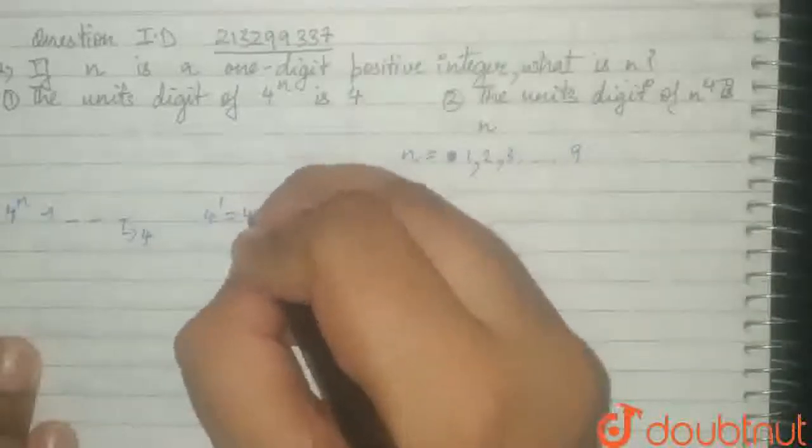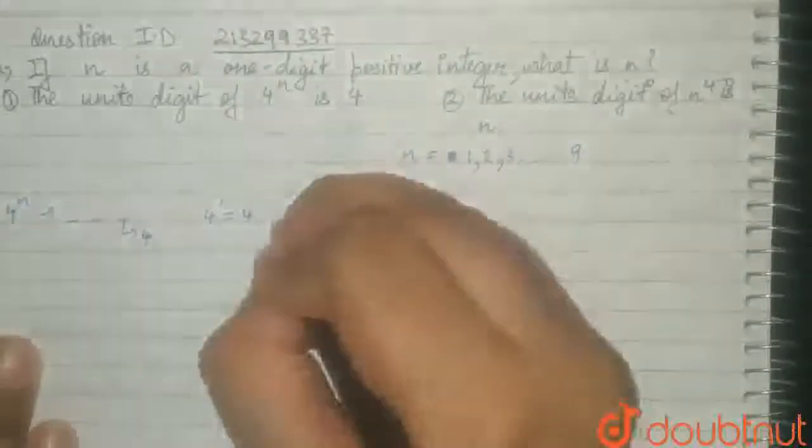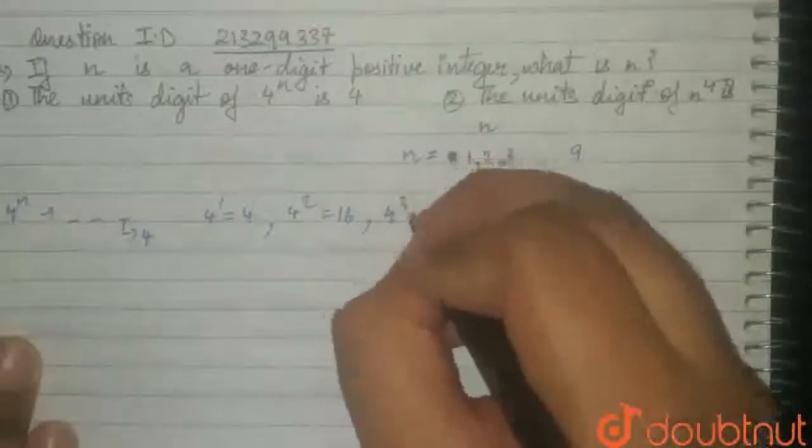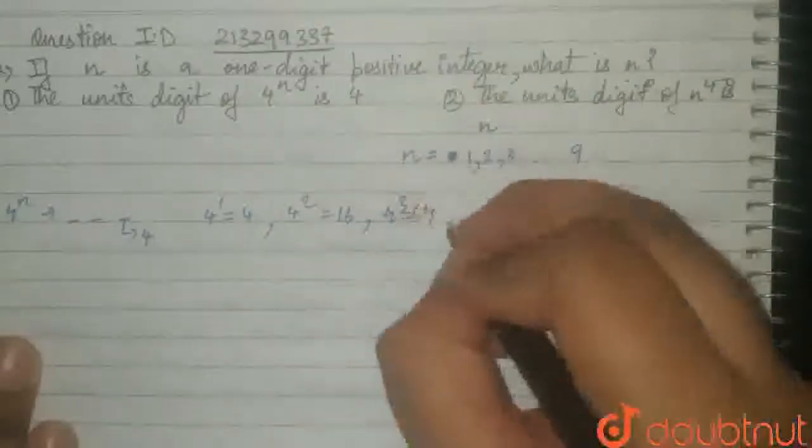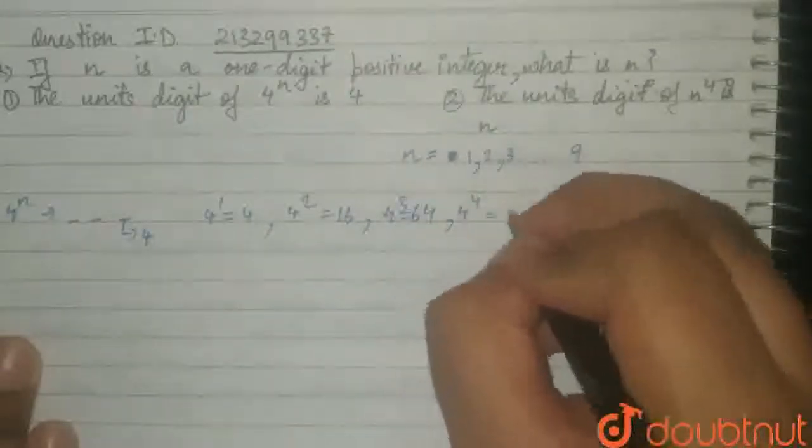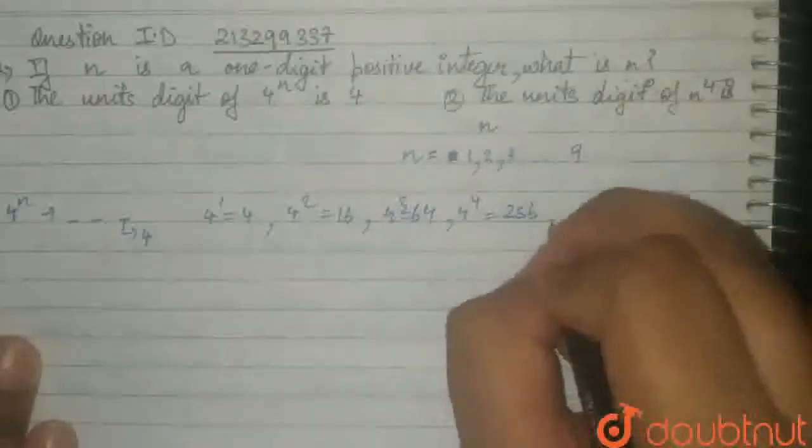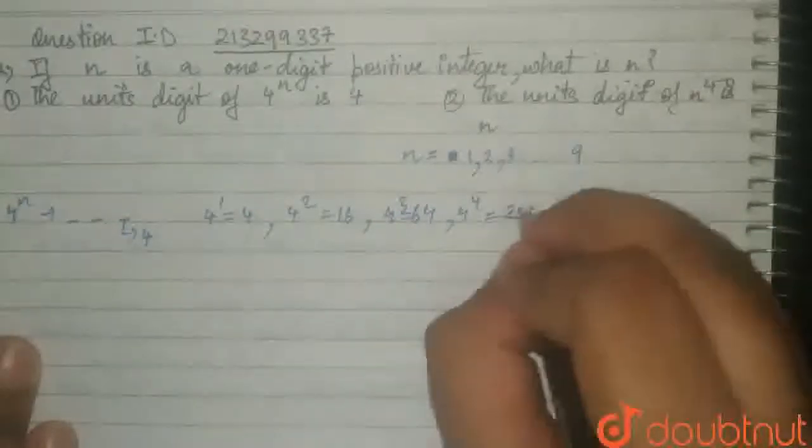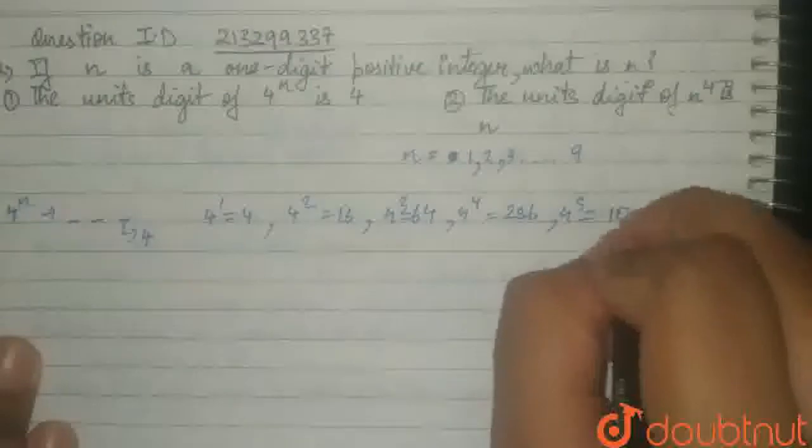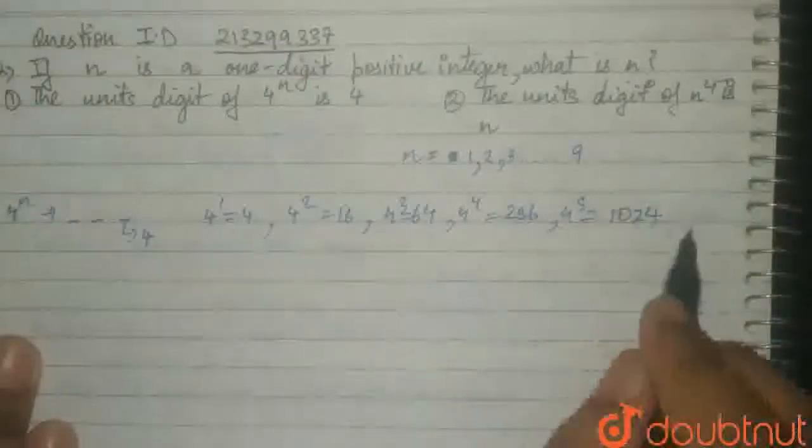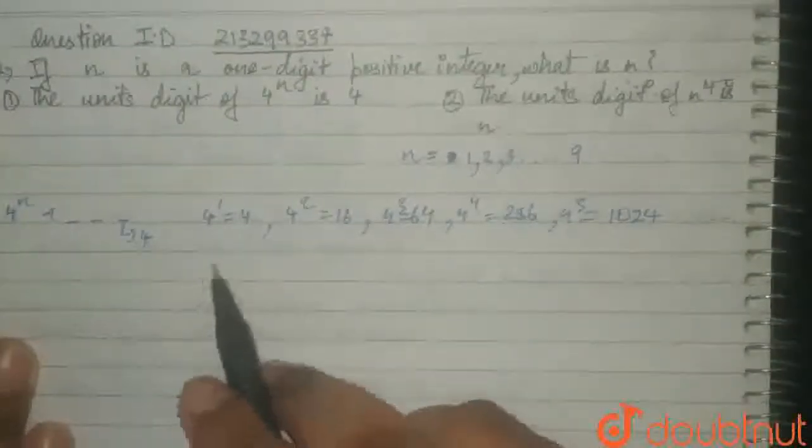4 raised to the power of 1 is 4. 4 square is 16. 4 cube is 64. 4 raised to the power of 4 is 256. 4 raised to the power of 5 is 1024. This keeps going.